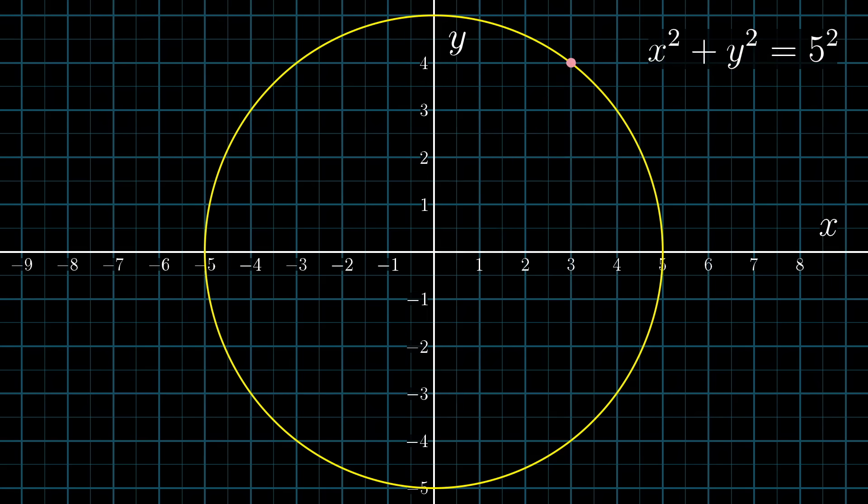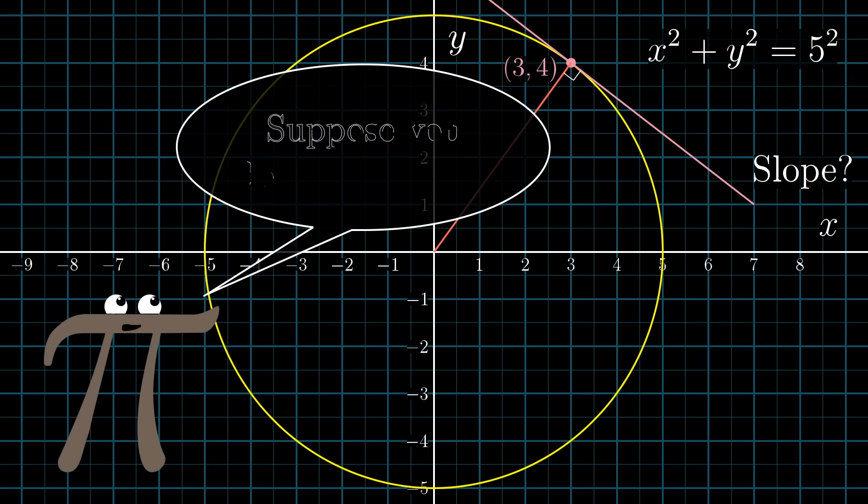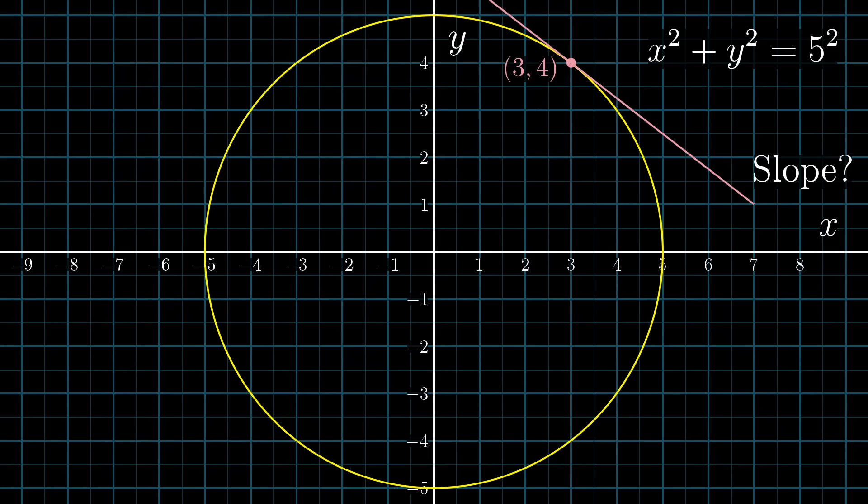Suppose that you want to find the slope of a tangent line to the circle, maybe at the point (x,y) = (3,4). Now if you're savvy with geometry you might already know that this tangent line is perpendicular to the radius touching it at that point. But let's say you don't already know that, or maybe you want a technique that generalizes to curves other than just circles.